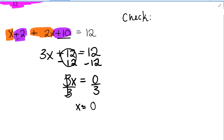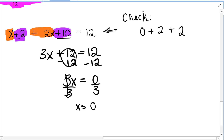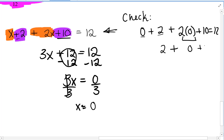To check, we plug in 0 for all x's in the original equation: 0 plus 2, plus 2 times 0 plus 10, equals 12. 0 plus 2 is 2; 2 times 0 is 0; so 2 plus 0 plus 10 is 12. 12 does equal 12, so x equals 0 is correct.